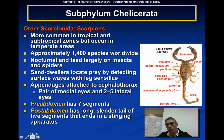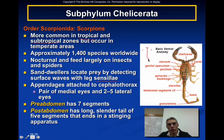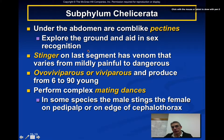You can see a good representation of a scorpion here, with appendages clearly attached to the cephalothorax and the abdominal region visible. They have a pair of medial eyes and two to five lateral eyes. The pre-abdomen has seven segments, and the post-abdomen has a long slender tail of five segments ending in a stinging apparatus. Under the abdomen are comb-like pectines used to explore the ground and aid in sex recognition.